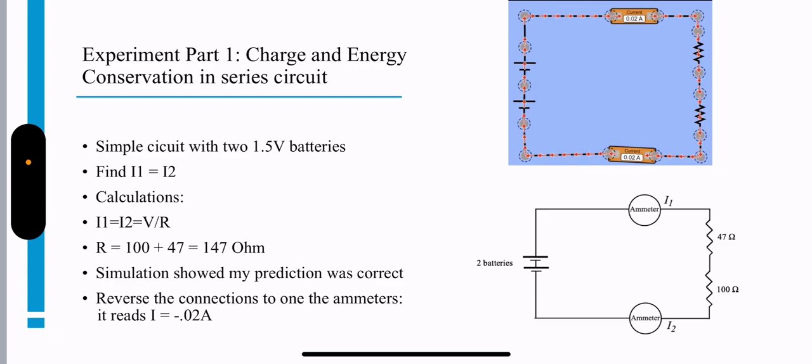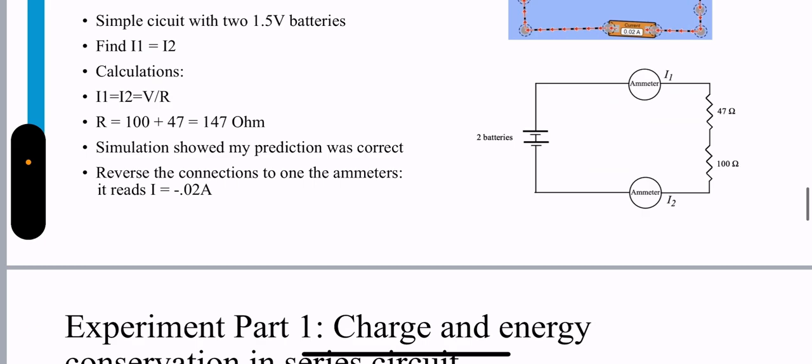Reversing the connections to one of the ammeters means i1 equals i2, so that means it reads as negative 0.02 amps.